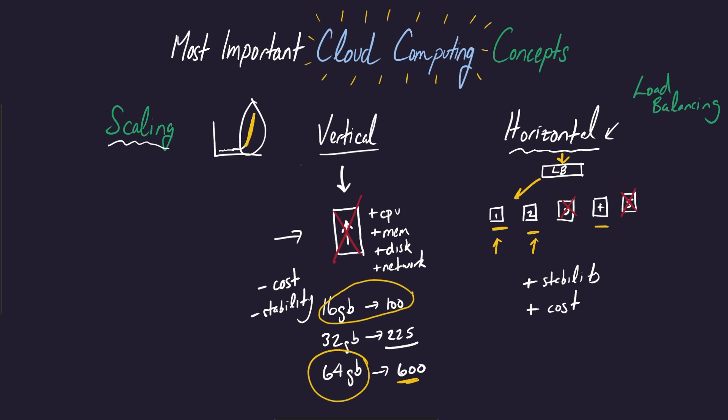it essentially distributes the traffic to one of the available hosts that are in this kind of virtual network. So in the example that we have here, if a request comes into the load balancer, it may pick number one in this case, right? Because it's currently available.